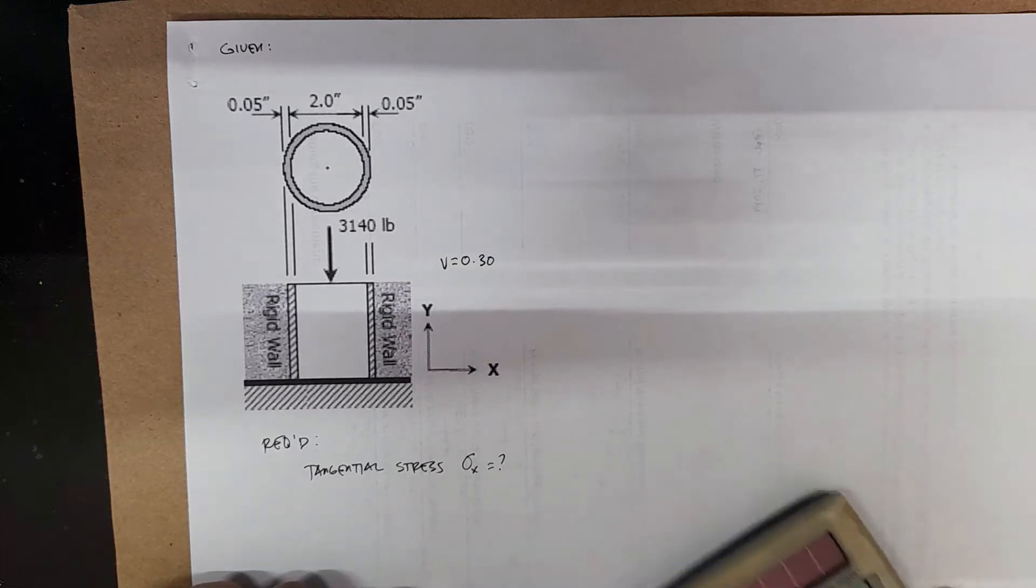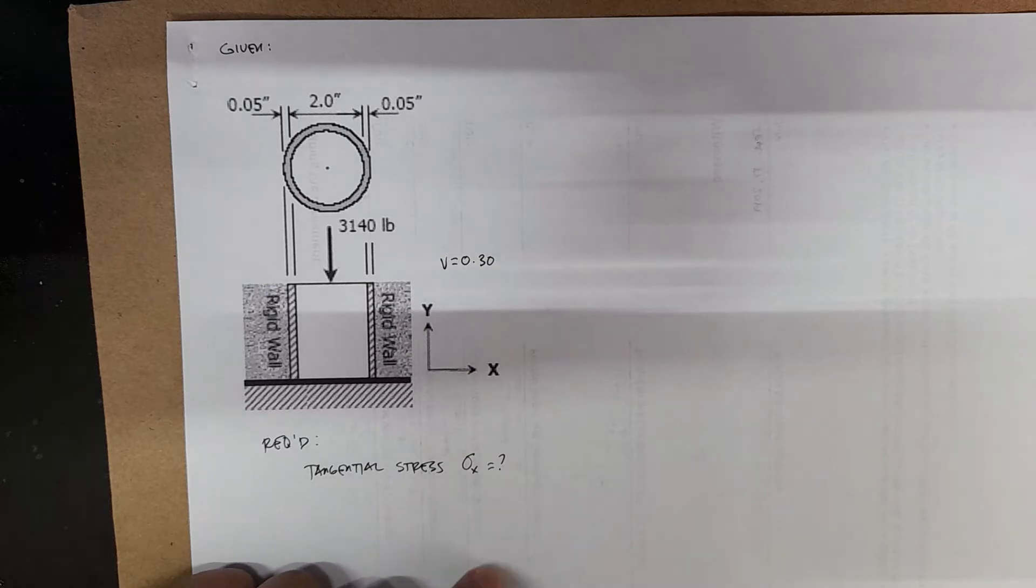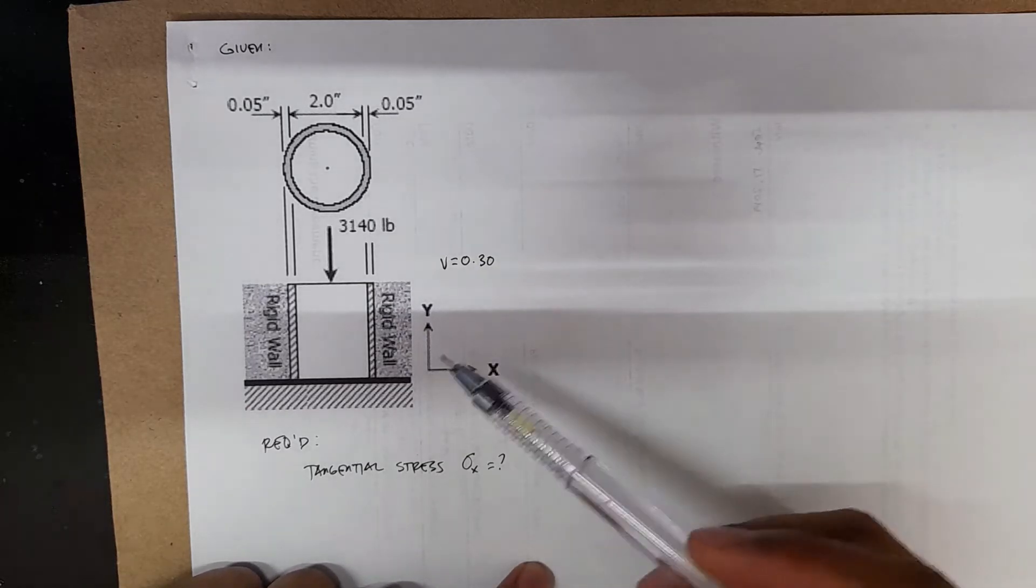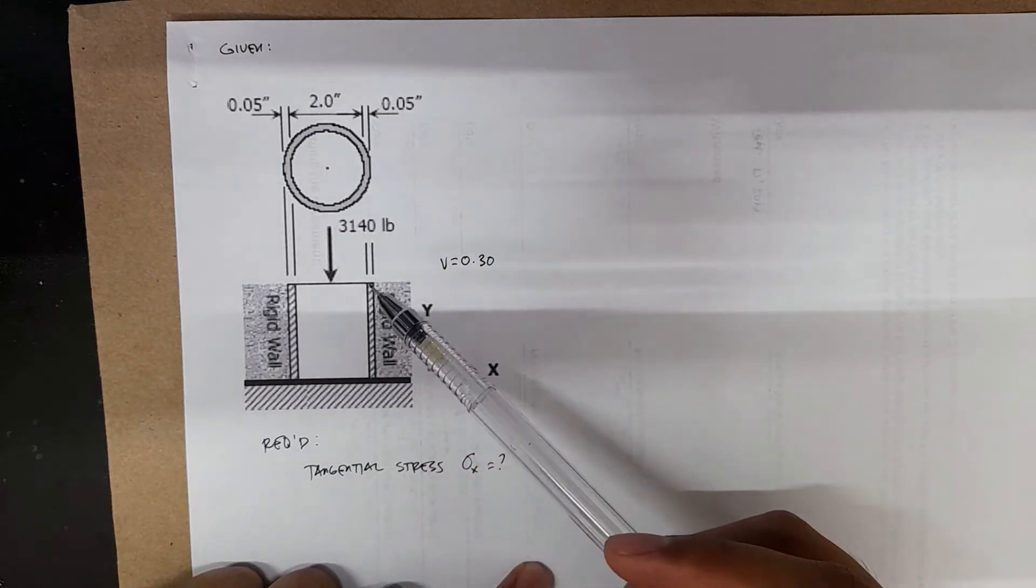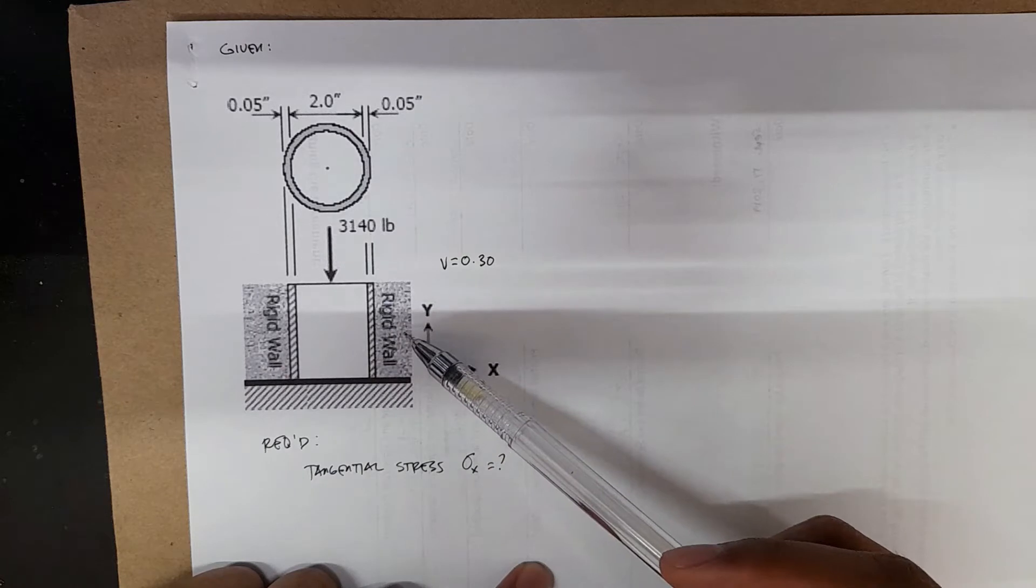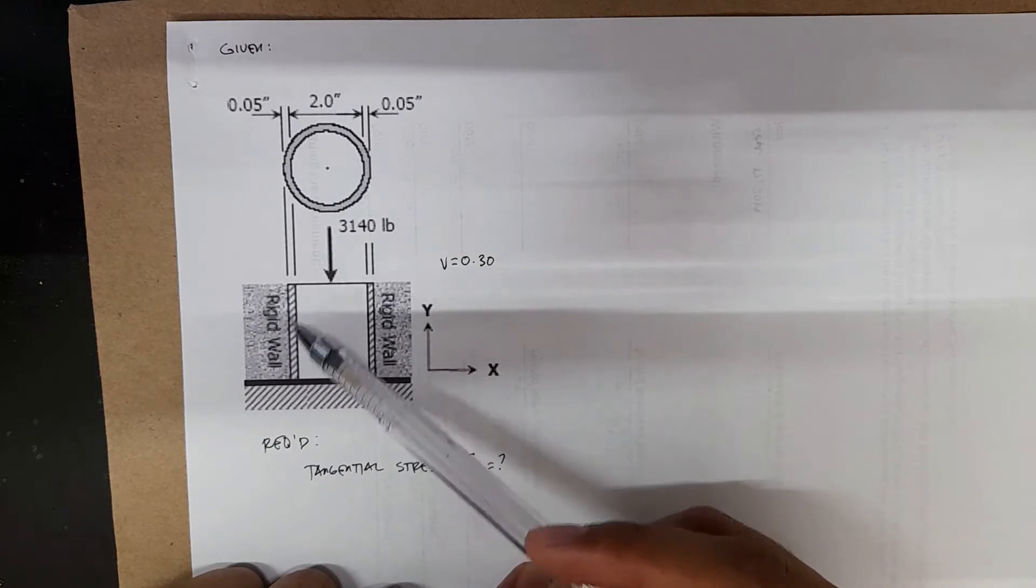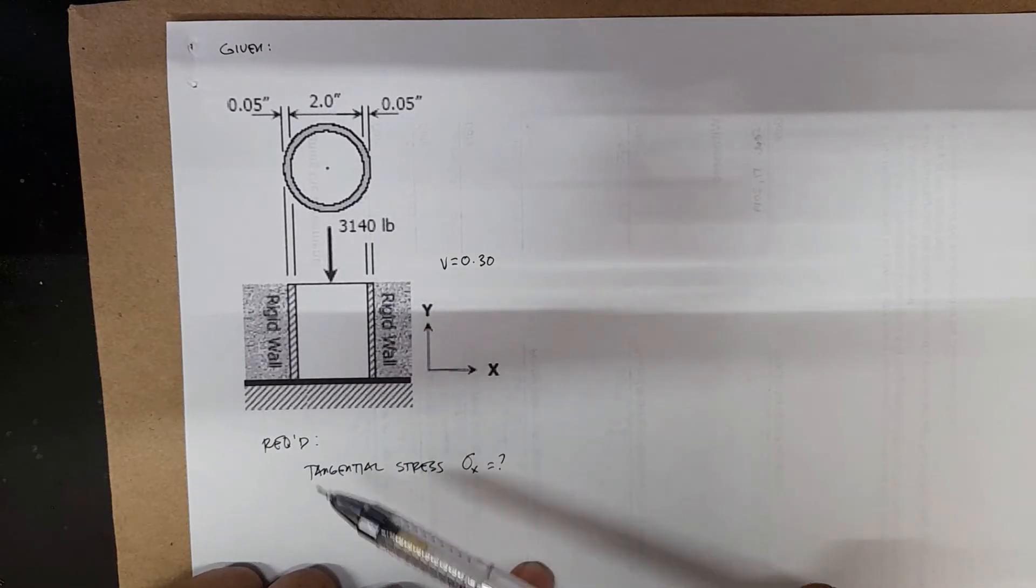Another sample problem on shielding deformation applied on a steel tube. We have a two-inch steel tube bounded by two rigid walls. With rigid walls, this won't move on both sides.